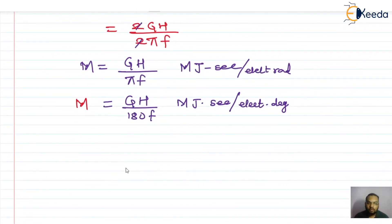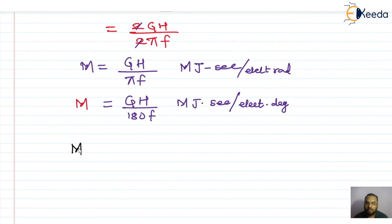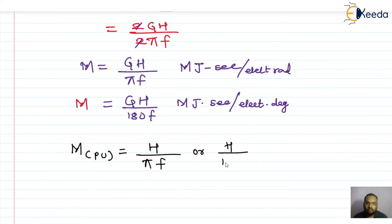Furthermore, in power system calculations we often work in per unit. Shifting G (the machine rating) as the base value, M per unit equals H / (πf), or equivalently H / (180f), giving the relationship between the two inertia constants of the machine in per unit form.